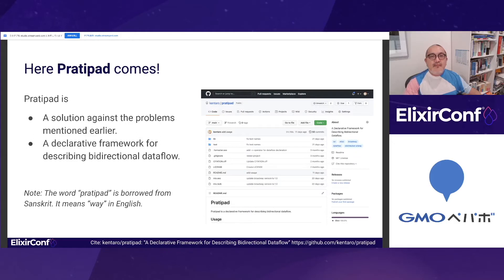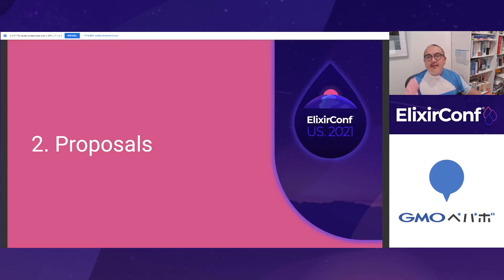Here, Platypad comes. It's a solution to the problems mentioned earlier. Platypad provides a declarative framework for describing bidirectional data flow between the three layers. It's already been published on GitHub. Almost all of the library is currently undocumented, though — I'm working on it. Second, I'll show you my proposal to solve the issues mentioned earlier using Platypad.